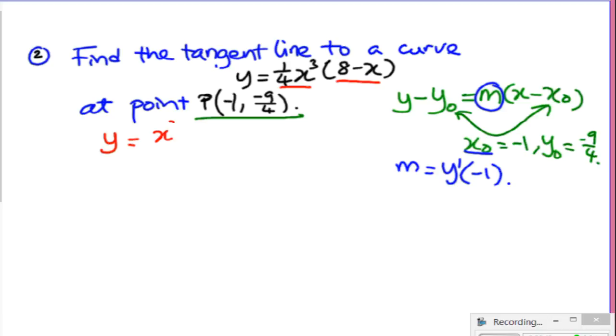I have x cubed over 4 times 8 plus x cubed over 4 times negative x. Simplifying this means 2x cubed and then minus x to the power of 4 over 4.